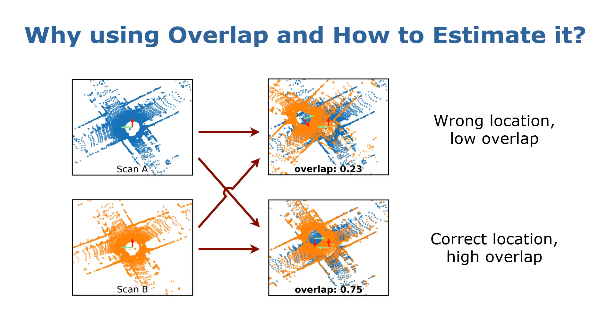The overlap between two LiDAR scans can be defined as the ratio of points that can be seen from both LiDAR scans. The reason why we use overlap to find loop closure candidates is that larger overlap values often correspond to better alignment between pairs of LiDAR scans.